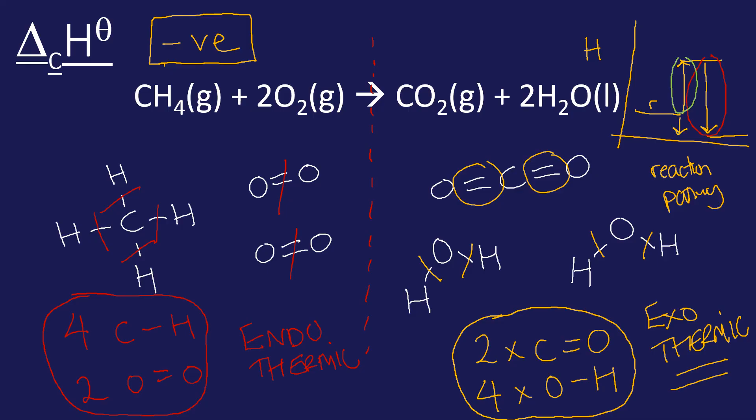We can visualize a reaction as breaking bonds in reactants and forming bonds in the products. If more energy is released when bonds are formed than was required to break the bonds in the reactants, that means it's exothermic. Endothermic would be the other way around. Endothermic would mean more energy was required to break the bonds in the reactants than was released when bonds in the products were formed, therefore it would be overall endothermic.